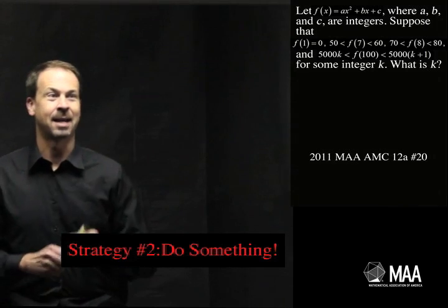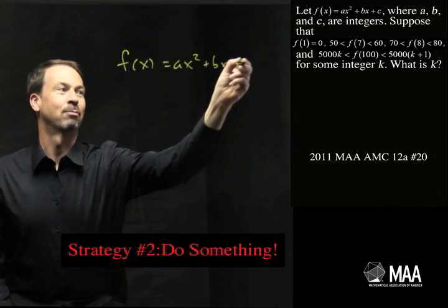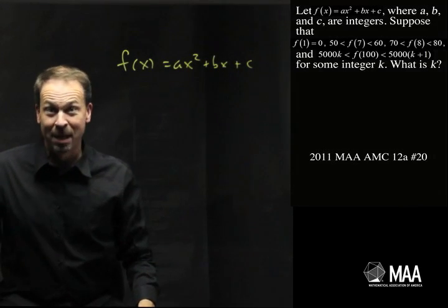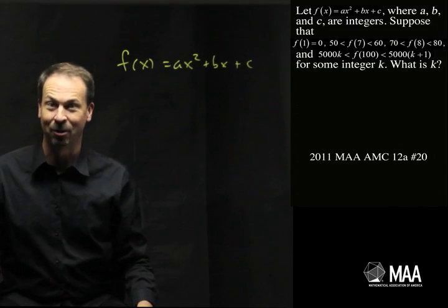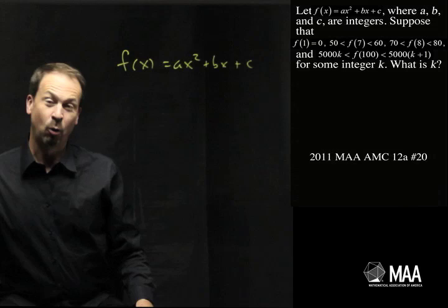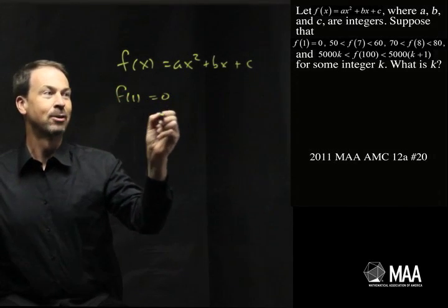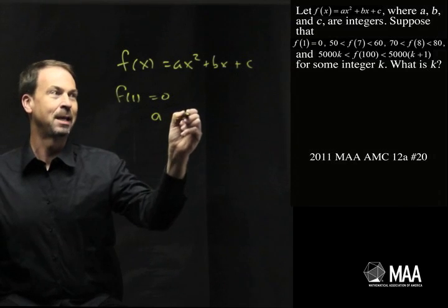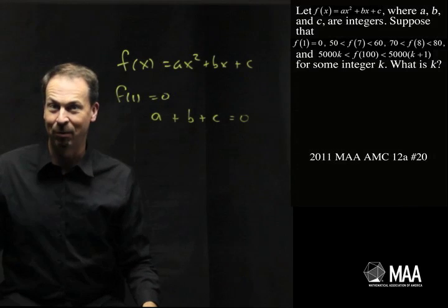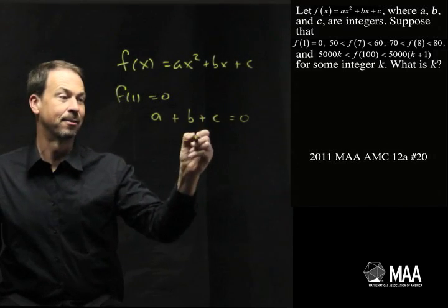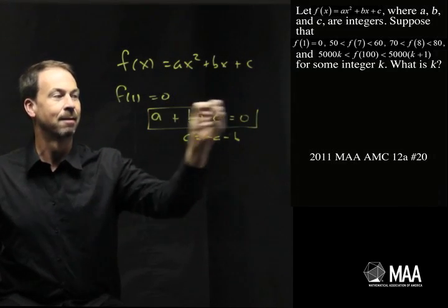We've got a quadratic. f(x) is ax squared plus bx plus c. That looks familiar from an algebra class, so I feel like I'm in some familiar territory, even though I have no idea what I'm going to do next. But I'm just going to do something. What could I do? The question does say f(1) is 0. Well, I feel like that's manageable. f(1) is 0 is telling me that a times 1 squared plus b times 1 plus c must be 0. Well, so there's an equation. a plus b plus c is 0. These three numbers add up to zilch. I could say that c is negative a minus b, or b is negative a minus c. I could play with this equation. That's something.